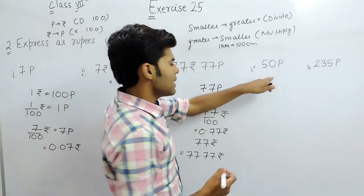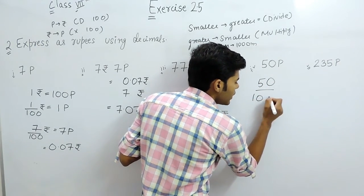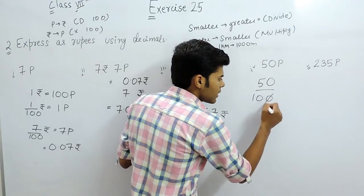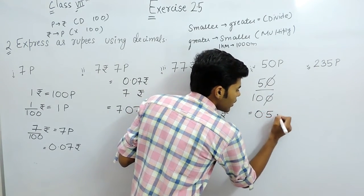Now, this one. It is in paisa. We have to convert it in rupees. As I told you, we will divide it with 100. This will be cancelled out and it will give us 0.5 rupees.